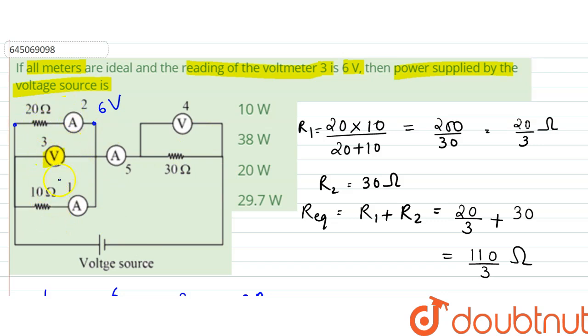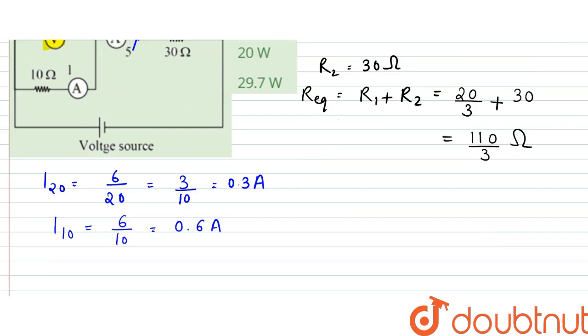The total current passing through the whole circuit would be equal to I, which is equal to I of 20 plus I of 10 itself, which is equal to 0.9 amperes.